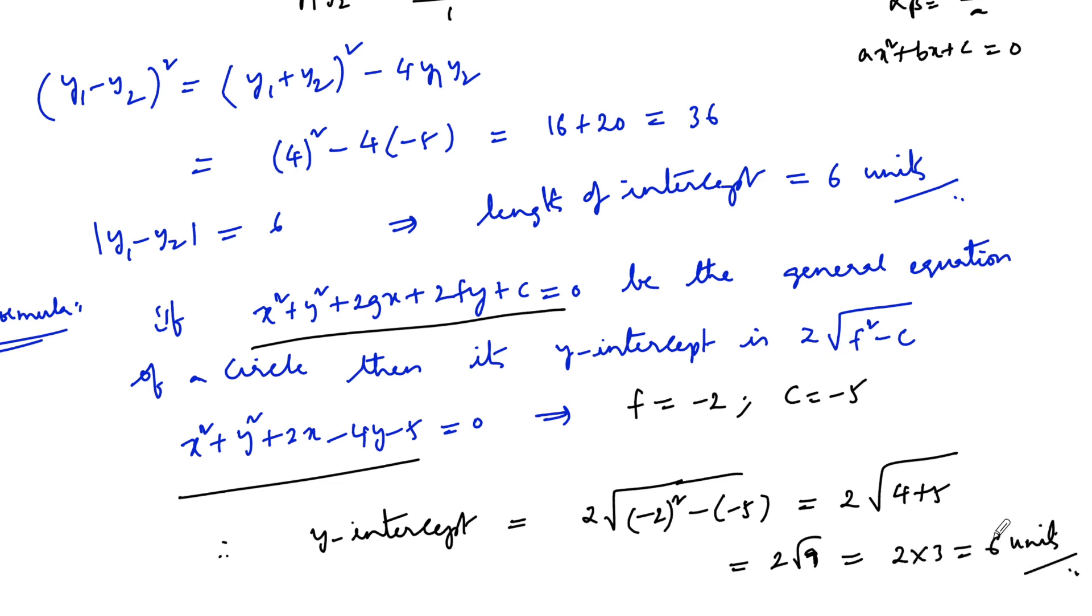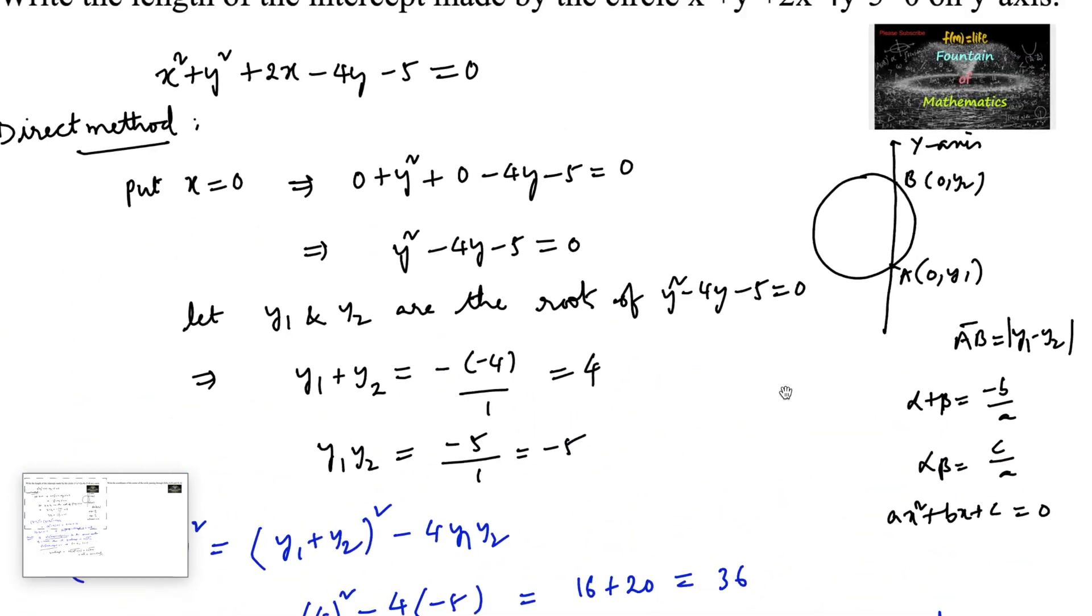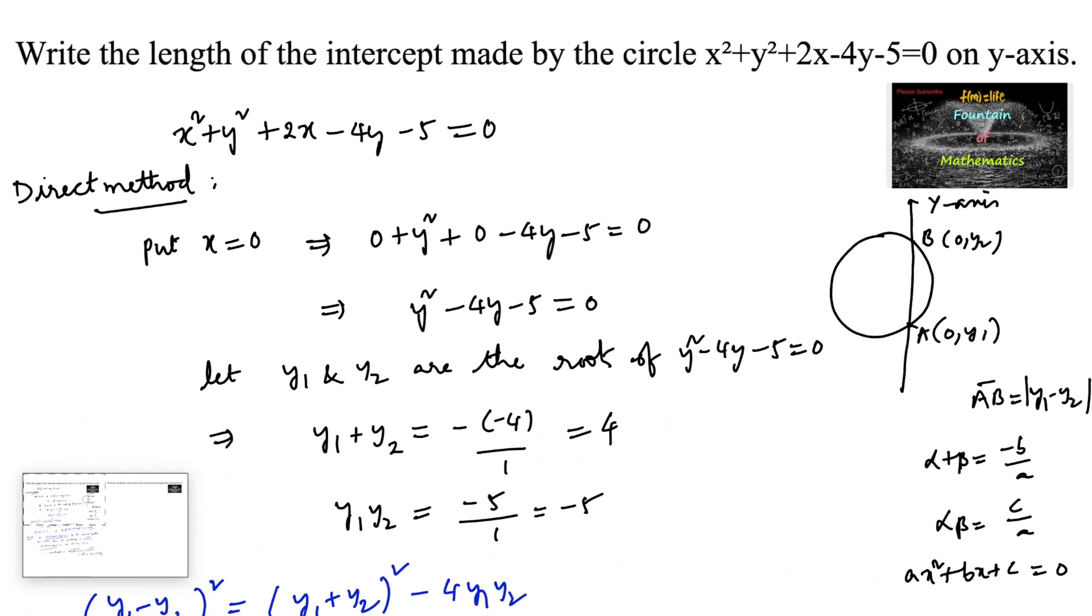Length is always positive, so we consider positive √9. We can conclude that the length of intercept made by the circle on the y-axis is 6 units.